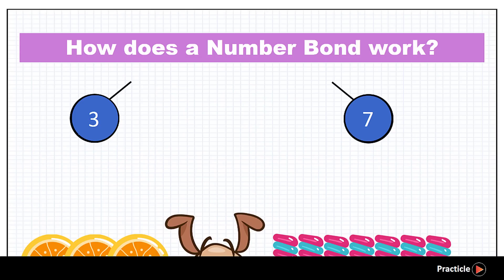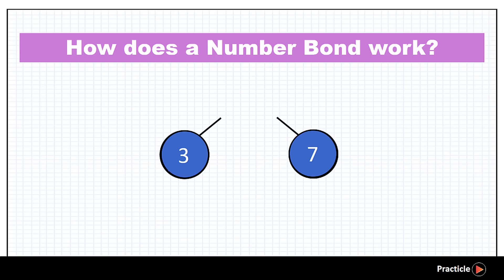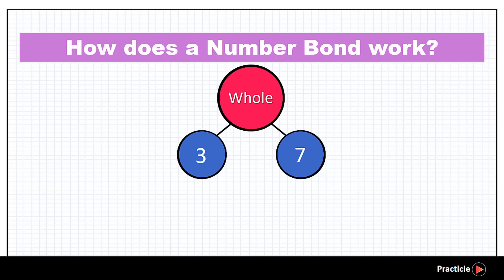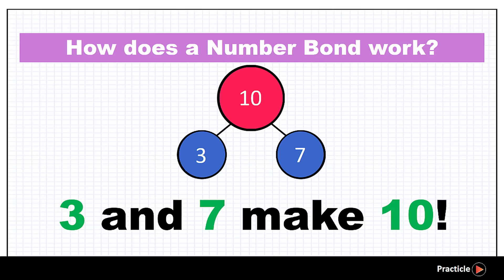And they look really delicious. So since 10 candies are all that we have, we are going to write the number 10 into the circle on the top. And this represents the whole, remember? Looks like our number bond is complete. And by looking at this, what can you tell? Are you able to see that 3 and 7 make 10?